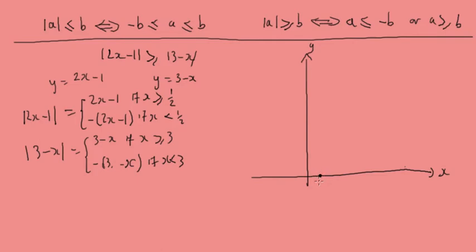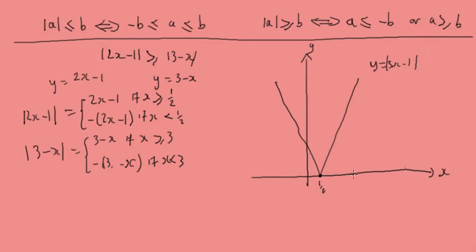The V-shape for y equals the modulus of 2x minus 1 has its vertex at x equals a half, going up on both sides. The graph of y equals the modulus of 3 minus x has its vertex at x equals 3.